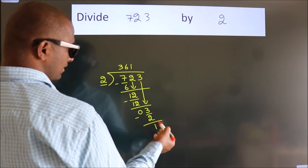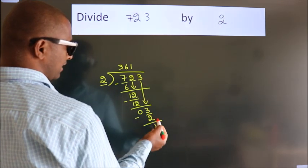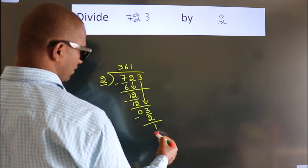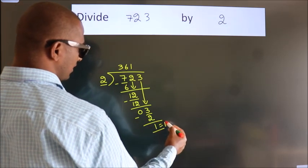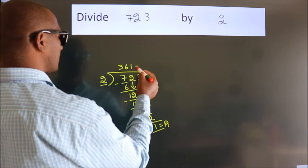After this, no more numbers to bring down. So we stop here. This is our remainder. This is our quotient.